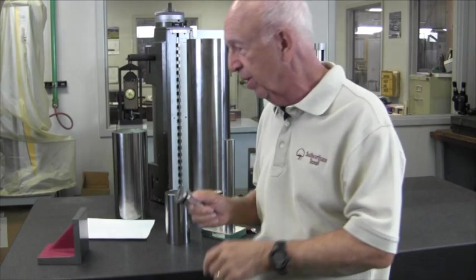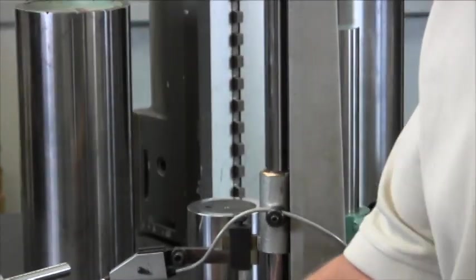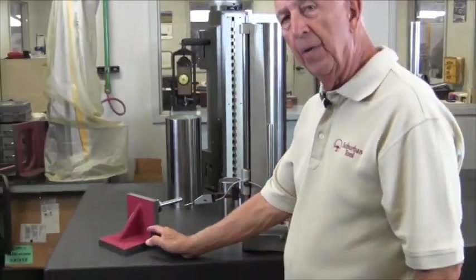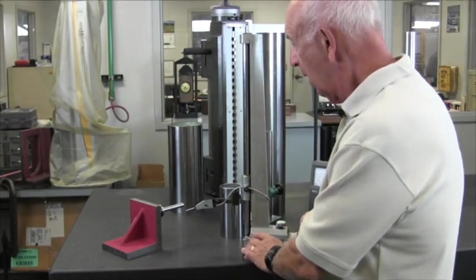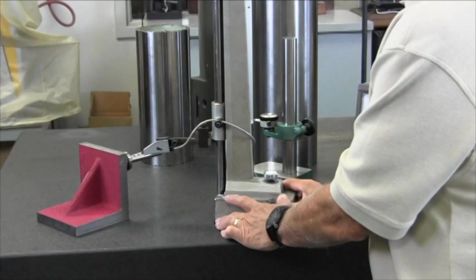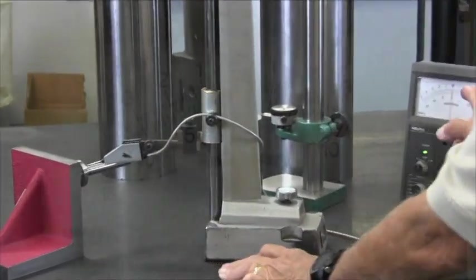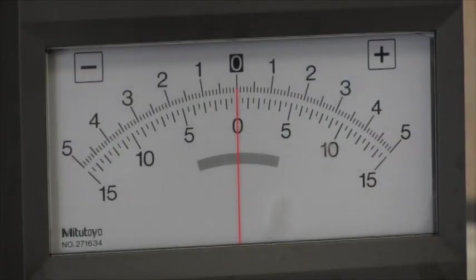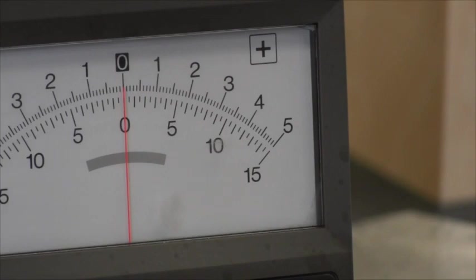But more importantly, I'm here to show you how to use it. Okay, folks, so we've got the magnetic cylinder square sitting on the face of the angle plate. And we're going to come over, we're going to check it now with our indicator. And we're zeroing it in here. We got zero right there.